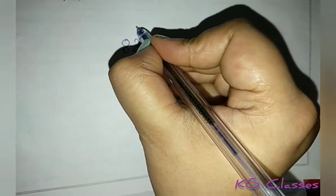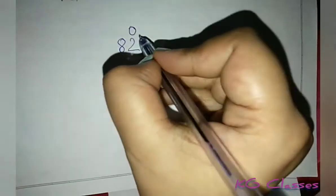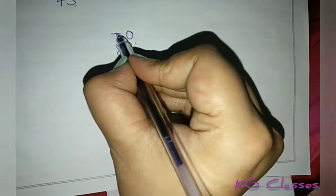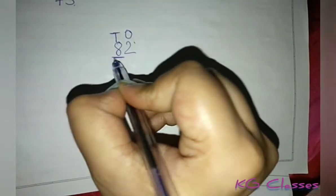How do we round off any number? For example, we have the digit 82. First, we will differentiate it in places. This is in the ones place and this is in the tens place. We have to round off to the tens place, so we will look at the ones place first.